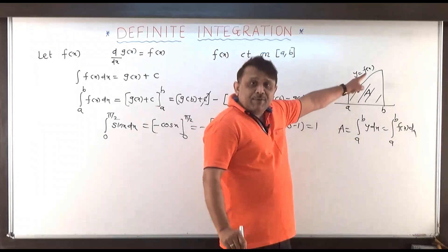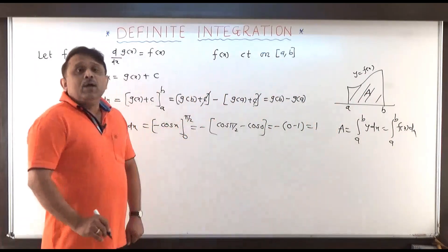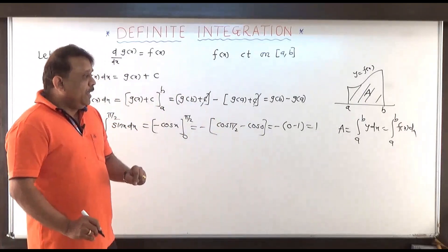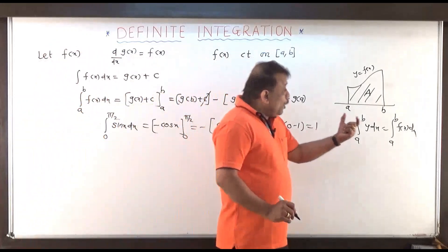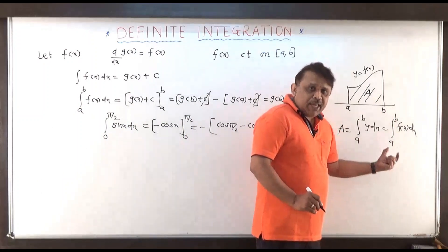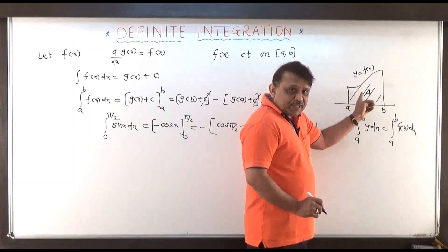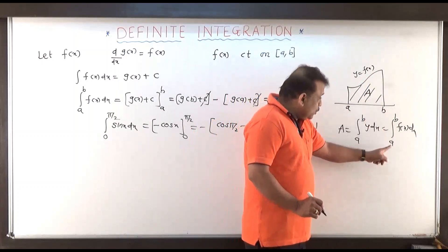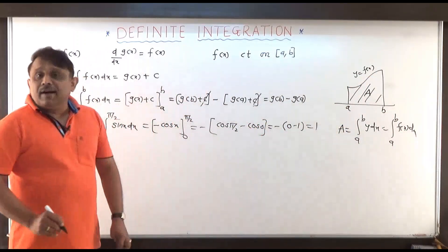Since y is equal to f of x, f of x can be replaced by y. So A, the area under this curve, is the integral from a to b of f of x dx. Geometrically, definite integration represents area under the curve. So y equal to f of x is the curve defined over the interval a to b, and the integral from a to b of f of x dx is nothing but the area under that curve.